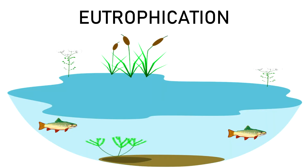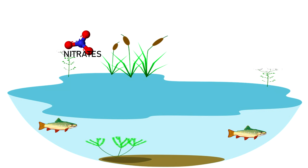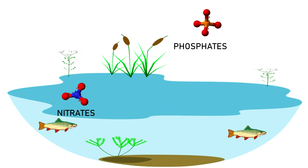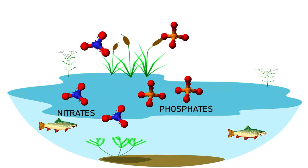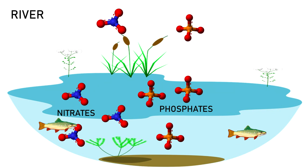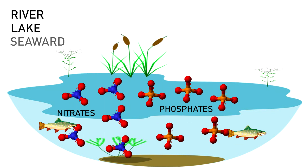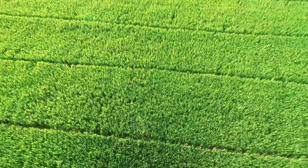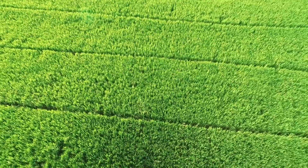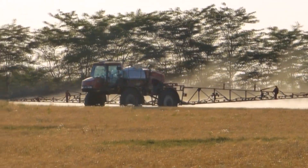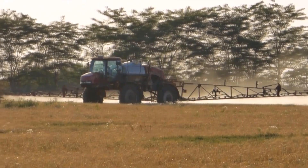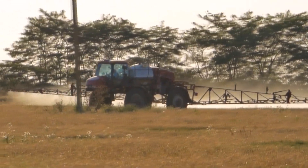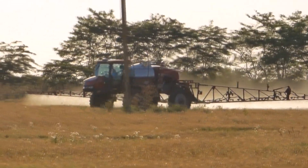Eutrophication is the accumulation of nutrients — mainly nitrates and phosphates — in an aquatic ecosystem, such as a river, a lake or the seabed. These nutrients are essential for primary production, but when certain concentrations are exceeded, they become a risk of contamination.